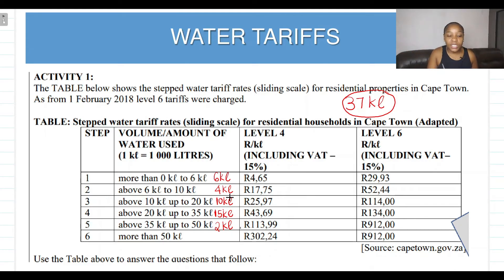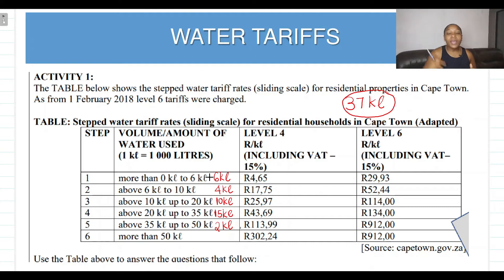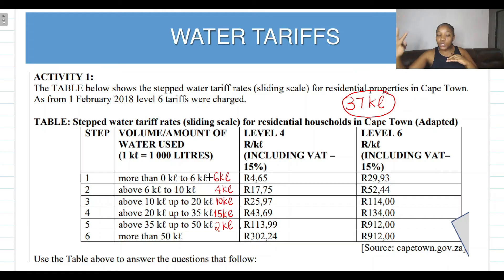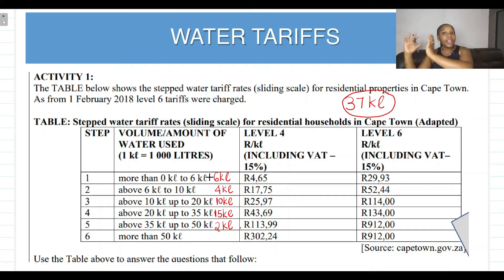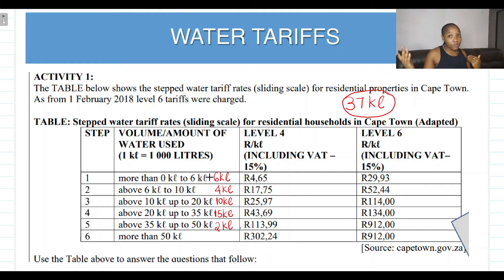That is basically the hard part. All we need to do now is multiply each volume by each tariff at each step, and then add it all up to get how much they pay for Level 4. Do the same thing for Level 6, multiply each volume by each tariff, add it all up. Then we compare: does Level 6 pay more, or Level 4?